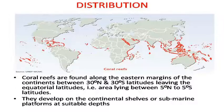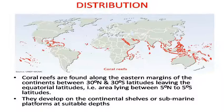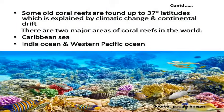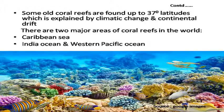This world map shows the distribution of coral reefs. Coral reefs are found along the eastern margins of the continents, between 30 degrees north and 30 degrees south latitudes, leaving the equatorial latitudes, i.e. the area lying between 5 degrees north to 5 degrees south latitudes. They develop on the continental shelves or submarine platforms at suitable depths. Some old coral reefs are found up to 37 degree latitudes, which is explained by climatic change and continental drift.